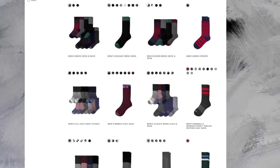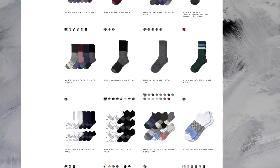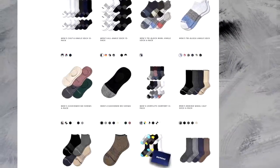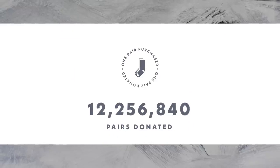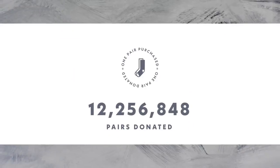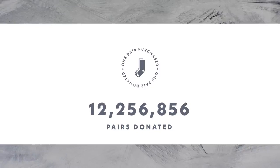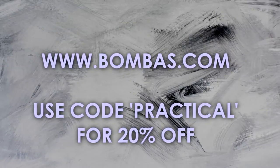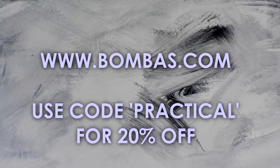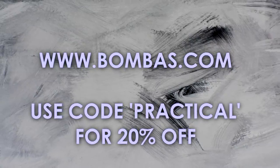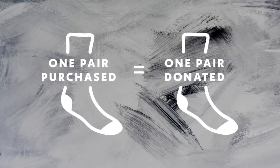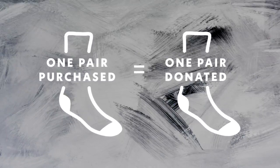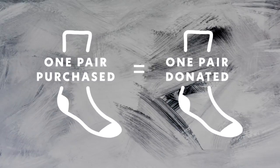Bombas motto is BE BETTER, and that's because for every pair of socks you buy, they donate a pair to someone in need. Socks are the number one requested item at homeless shelters, and I love this one-for-one business model. Support practical engineering by using code PRACTICAL at Bombas.com. Get 20% off a pair for yourself, or they make awesome gifts. Either way, you know that someone in need will be getting a pair too. Again, thank you for watching, and let me know what you think.